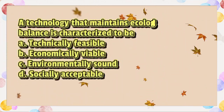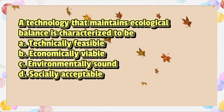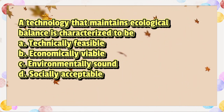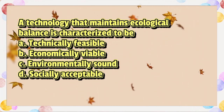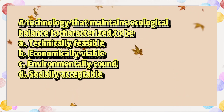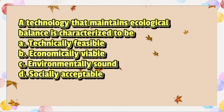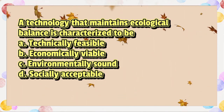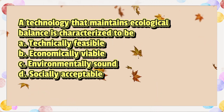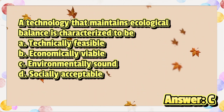A technology that maintains ecological balance is characterized to be: A. Technically feasible. B. Economically viable. C. Environmentally sound. D. Socially acceptable. The answer is letter C.